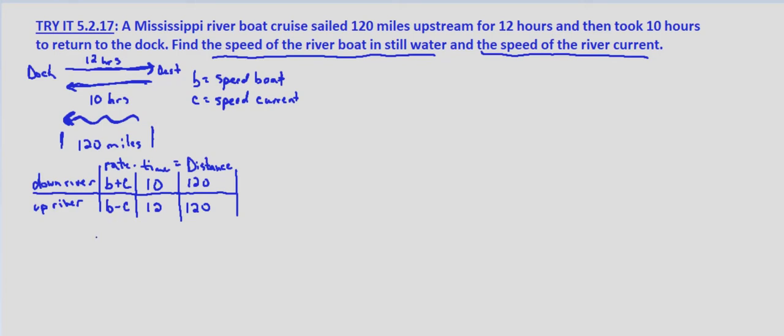To set up our system of equations we have 10 times b plus c, rate times time equals 120. And then 12 times b minus c, rate times time equals the same distance 120.